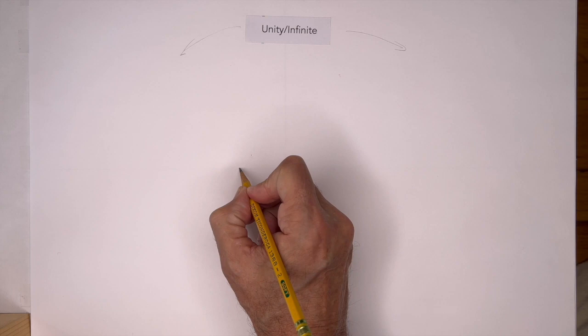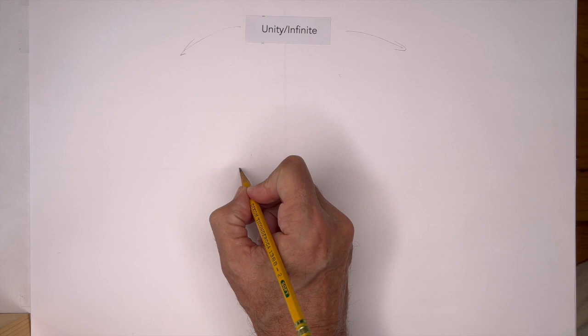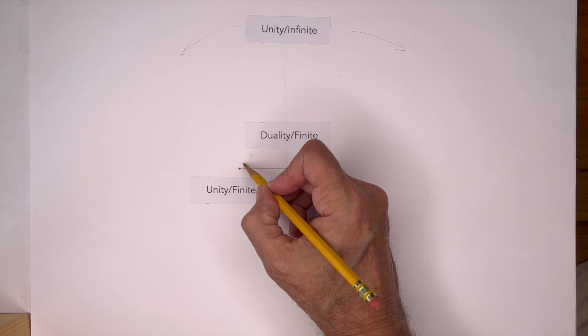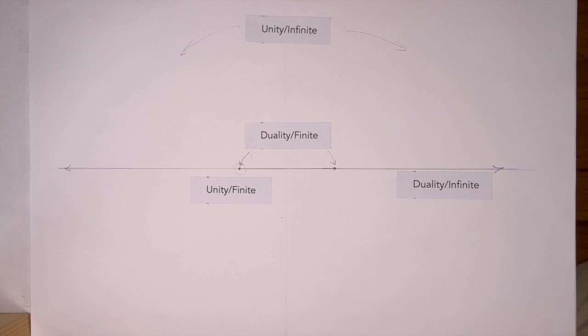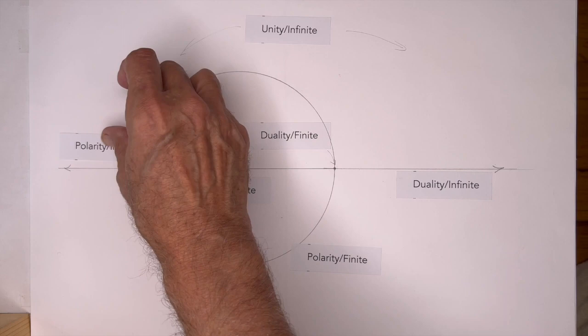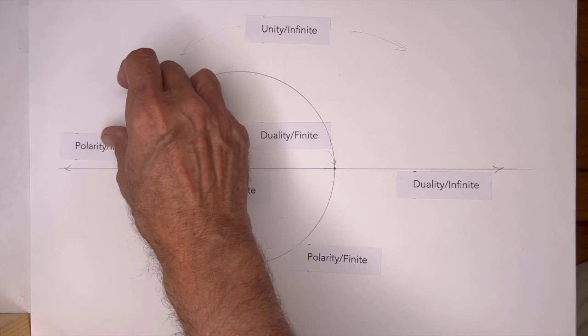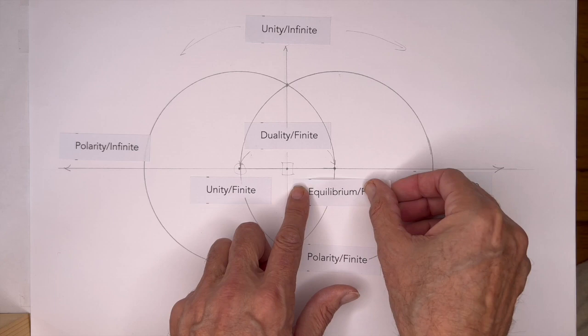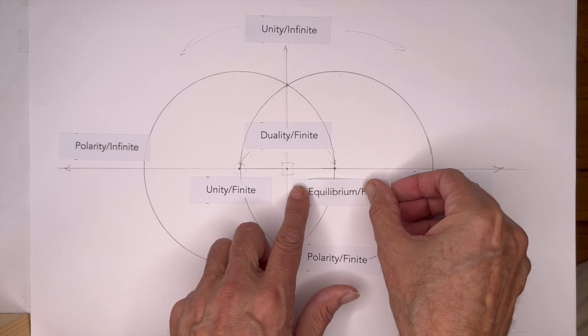The drawing surface represents unity in its infinite aspect; the single point represents unity in its finite aspect. The line segment represents duality in its finite aspect; the continuation of the line segment into an infinite line represents duality in its infinite aspect. The circle and the straight line are polar opposites — the circle is the finite aspect of polarity, the straight line is the infinite aspect. The perpendicular intersection is the finite aspect of equilibrium; parallel lines are the infinite aspect of equilibrium.